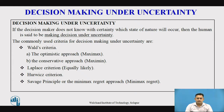Coming to the point — what is decision making under uncertainty? Particularly, if the decision maker does not know what exactly the outcome is going to be, that is the certainty of the particular state of nature, then the person is said to be making a decision under uncertainty.